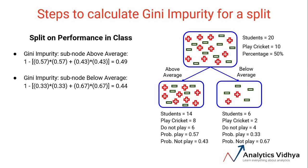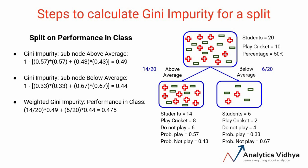To calculate the Gini impurity of the split, we take the weighted sum of Gini impurities of both nodes — above average and below average. The weight of a node is the number of samples in that node divided by the total number of samples in the parent node. For the above average node, the weight is 14/20, and for below average it is 6/20. The weighted Gini impurity for the performance in class split comes out to be 0.475.